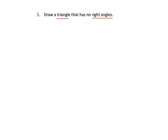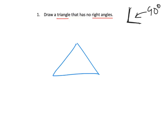Draw a triangle with no right angles. We know it's got to have three sides, and a right angle is an angle that is 90 degrees — kind of like the corner of a piece of paper or the corner of a door frame. So it's got to be a triangle with no right angle. There are many valid options. We expect students to be using a ruler to practice drawing those straight edges.